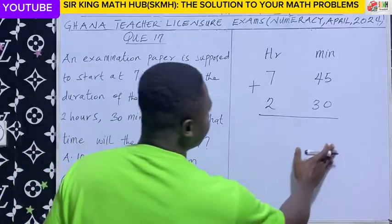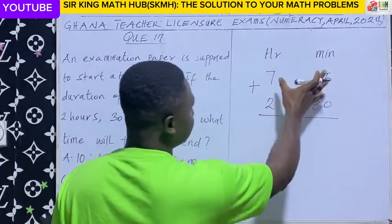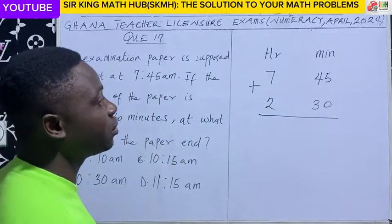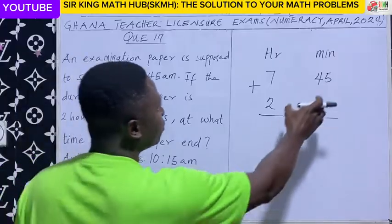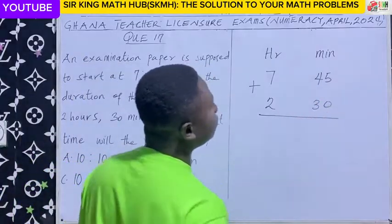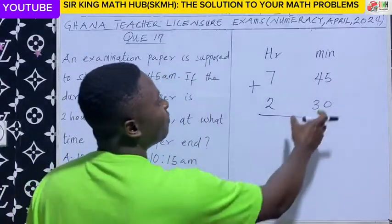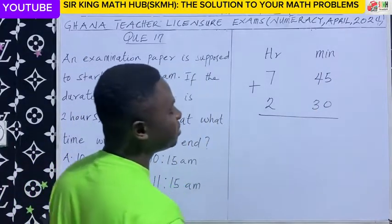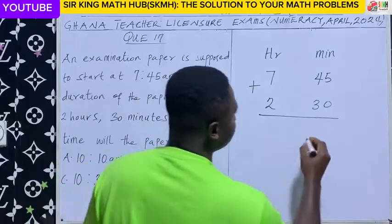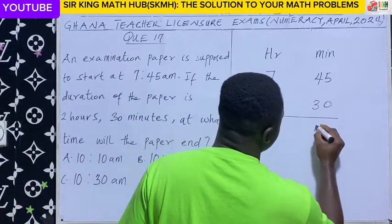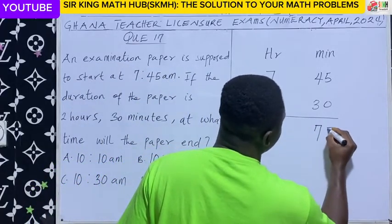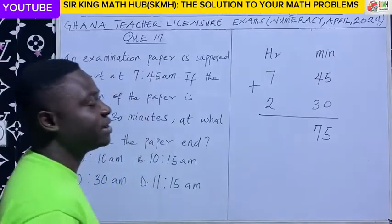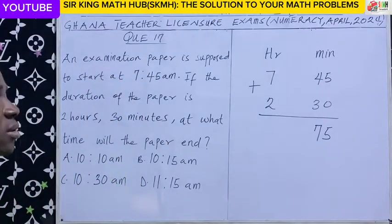We are performing addition of time. Let's start with the minutes column: 45 minutes plus 30 minutes gives us 75 minutes.